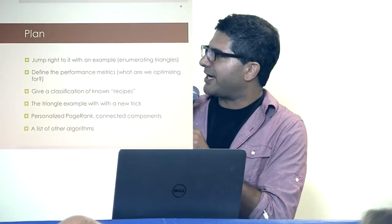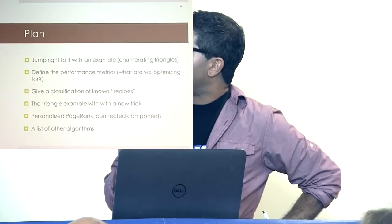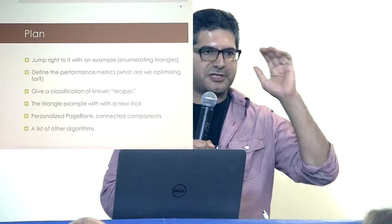I'll give you one example — kind of an old example. How do I find all the triangles in a really big graph, and how do I do it efficiently? What happens if I don't think carefully into it? That would be a good example to open up with, and then I'll walk you through what we mean by a good algorithm versus a naive algorithm.